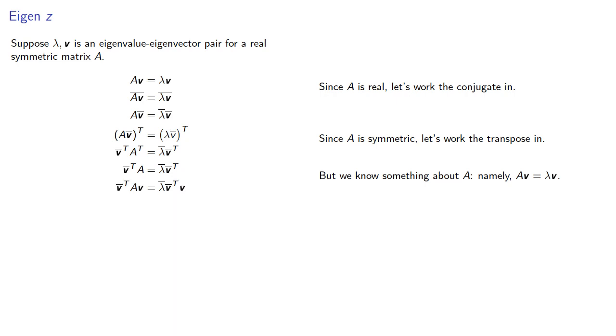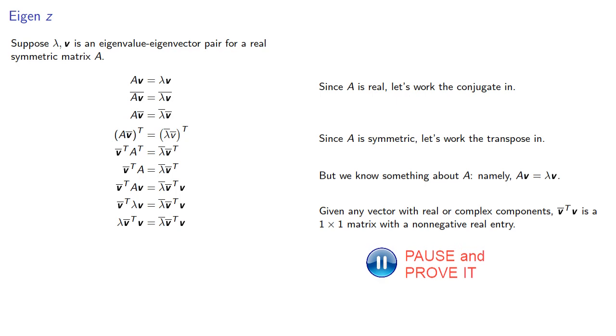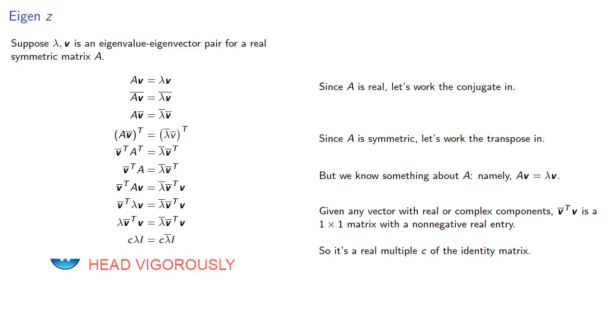Over on the left, we have Av, which we know is lambda v. And we'll float that constant to the front. And over on the right, we have the conjugate of a vector transpose times the vector. But given any vector with real or complex components, the conjugate of v transpose v is a one-by-one matrix with a non-negative real entry, so it's a real multiple c of the identity matrix. So that means c times lambda is c times the conjugate of lambda. And since c is non-negative, this means lambda is the conjugate of lambda.